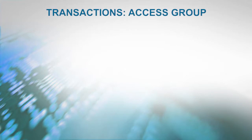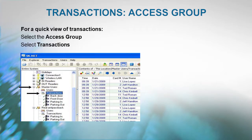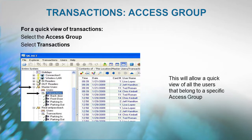For a quick view of transactions for a specific access group, simply select the desired access group and then select Transactions. This will allow a quick view of all the users that belong to a specific access group.